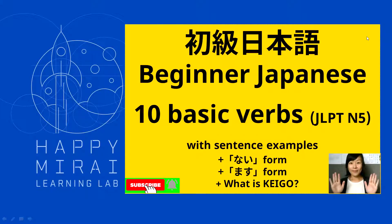It's going to be Group 1 on the JLPT N5. Some basic verbs with sentence examples. I will introduce how to change them to negative form as well as masu form — the polite style. And at the end of the video, I'm going to introduce about Keigo. So if you are interested, please watch until the end.